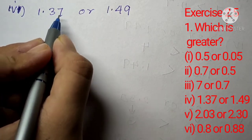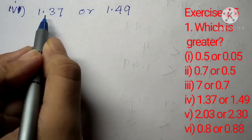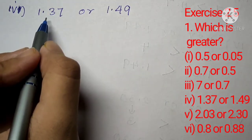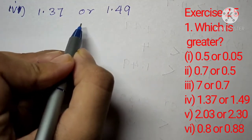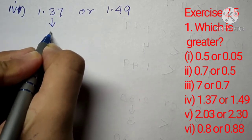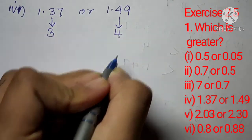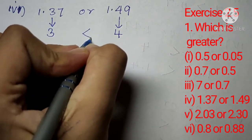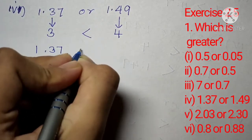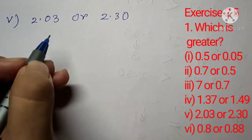Question number 1, part 4: which is greater, 1.37 or 1.49? Both numbers have 1 on the left hand side of the decimal point, so we compare the right hand side. Starting from the 10th place, this number has 3 and this number has 4. Since 4 is greater than 3, we can say 1.37 is smaller than 1.49.